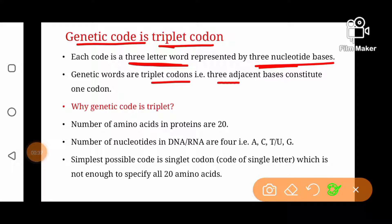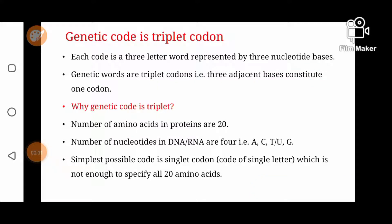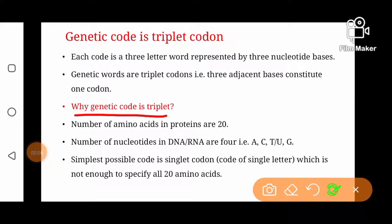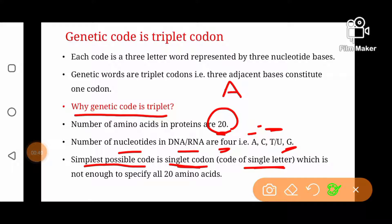Genetic code is a triplet codon, meaning three adjacent nucleotide bases constitute one codon, three consecutive bases constitute one codon. Why is genetic code a triplet? The reason is there are 20 amino acids, and all protein molecules are made of different combinations of these 20 amino acids. If we consider the simplest possible code, which is a singlet codon — a singlet codon means every code is made of a single letter — we have four nucleotides: adenine, cytosine, uracil, and guanine, so these four nucleotides can specify only four amino acids.